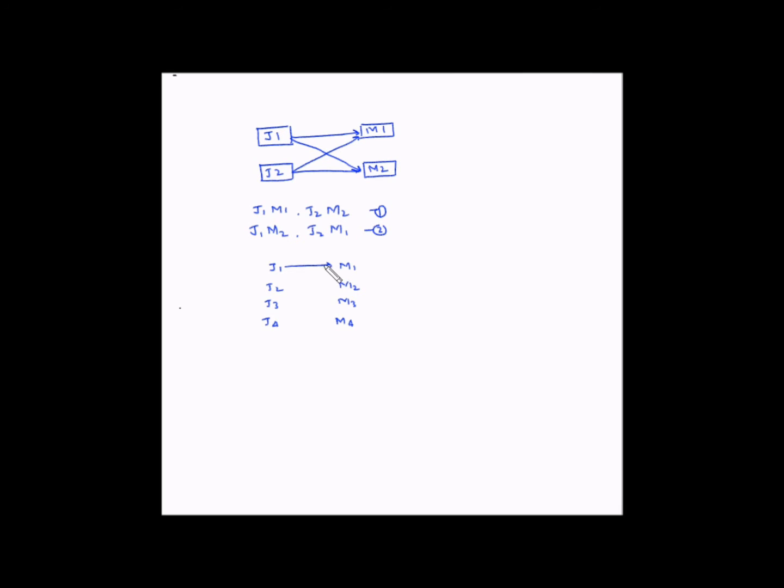You can have J1 being performed on M1 or J1 performed on M2, J1 performed on M3 or J1 performed on M4. And similarly, you will have J2 performed on M1, etc. If we were to see how many combinations we would have in this case, you will basically have four factorial which is nothing but four into three into two into one combinations.